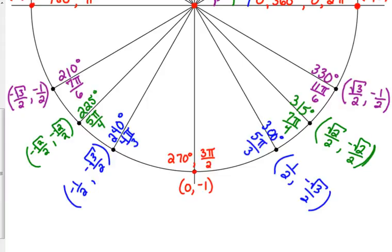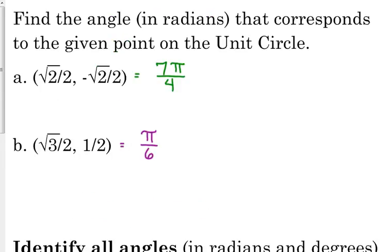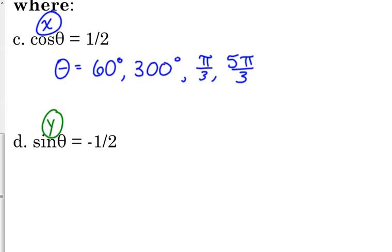That's at 210, 7 pi over 6 or 330, 11 pi over 6. Theta equals 210 degrees or 7 pi over 6 and 330 degrees or 11 pi over 6. And guess what? You can confirm this. It's really easy.